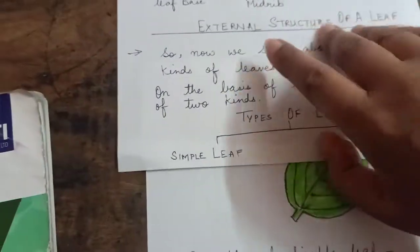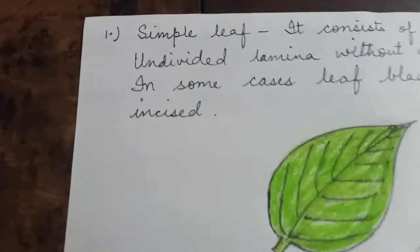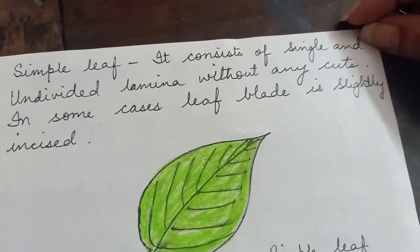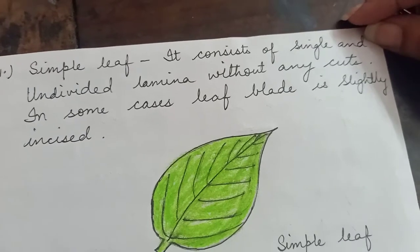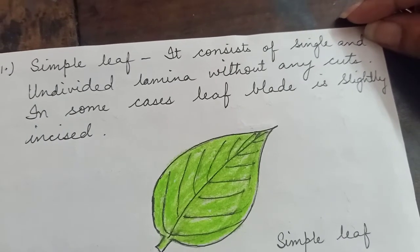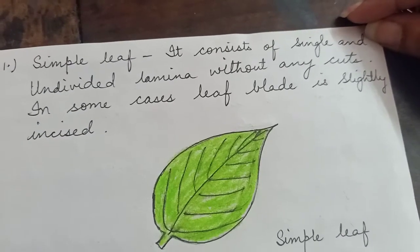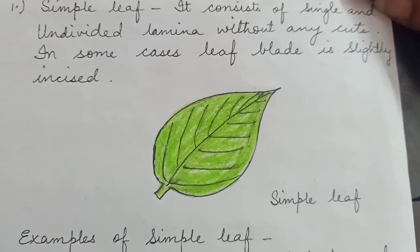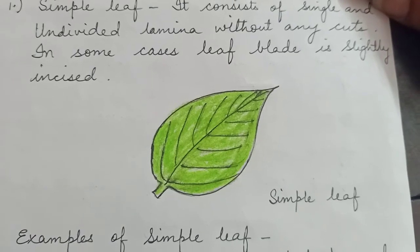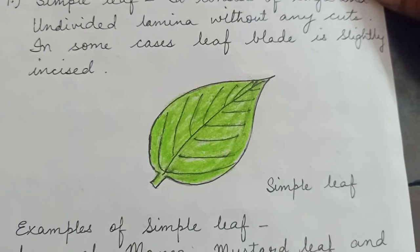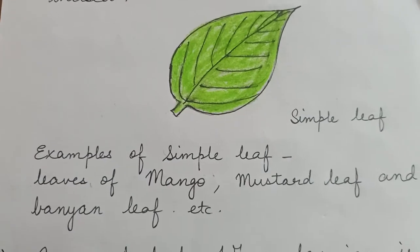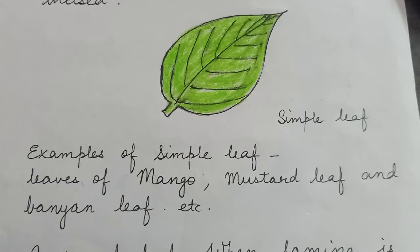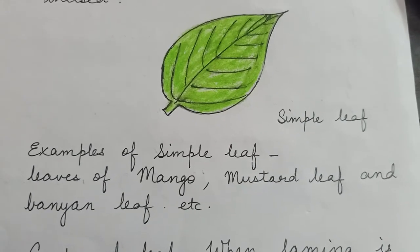A simple leaf consists of a single and undivided lamina without any cuts. In some cases this leaf plate is slightly indented in size. You can see the picture of a simple leaf. Few examples of simple leaf include leaves of mango, mustard, and banyan.